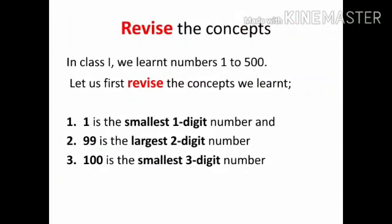Also, we learned that number 1 is the smallest one digit number, number 99 is the largest two digit number, and number 100 is the smallest three digit number.